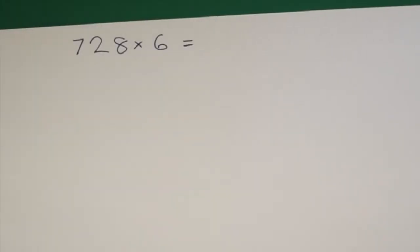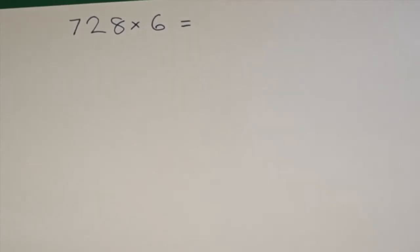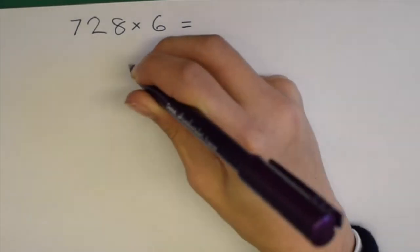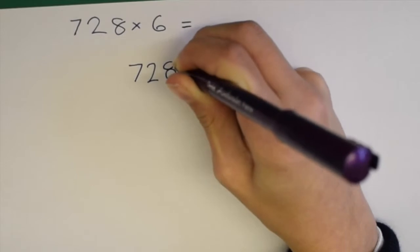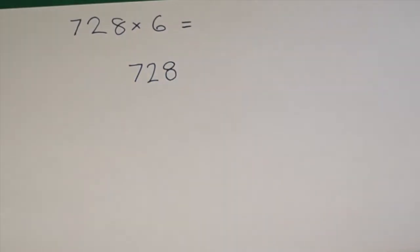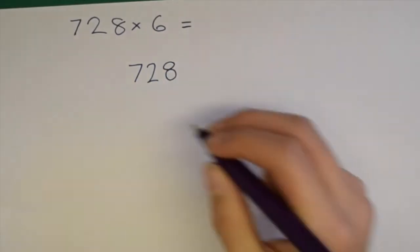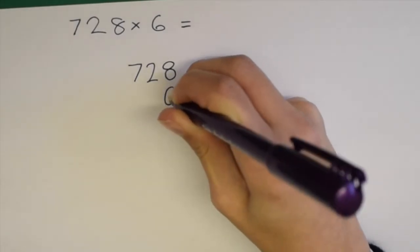Today we are going to be learning multiplication using the ladder method. First of all, we are going to write 728 and we are also going to write 6 underneath it. Make sure you line them up.